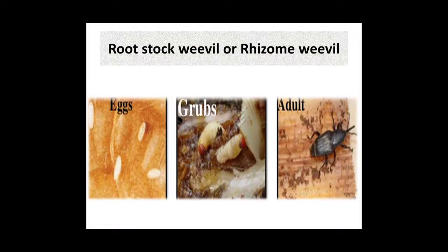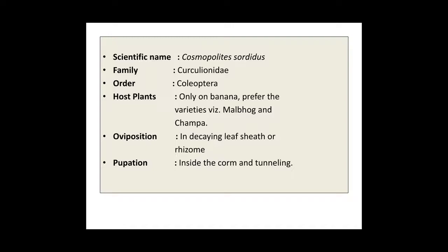The first pest of banana is Rootstock Weevil or Rhizome Weevil. These are the different life stages: Eggs, Grubs, and Adult. The scientific name of Rootstock Weevil is Cosmopolites sordidus. It belongs to family Curculionidae and order Coleoptera. The host plant is only banana, preferring varieties like Malbhog and Champa. Oviposition takes place in decaying leaf sheath or the rhizome, and pupation takes place inside the corm tunneling.